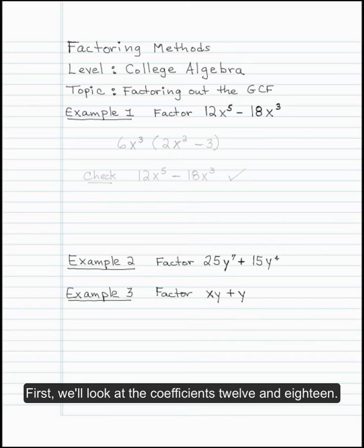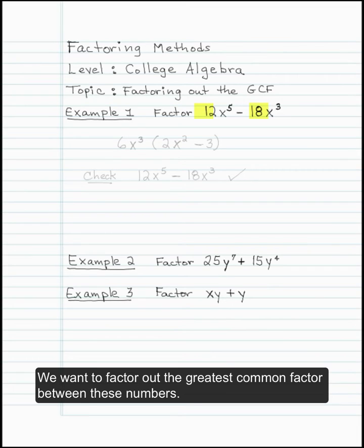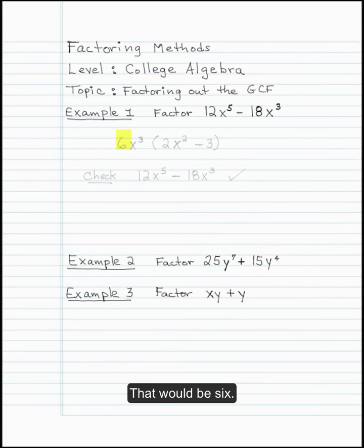First, we'll look at the coefficients 12 and 18. We want to factor out the greatest common factor between these numbers. That would be 6.